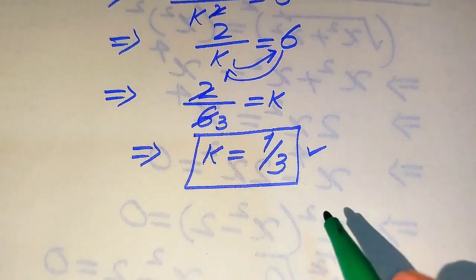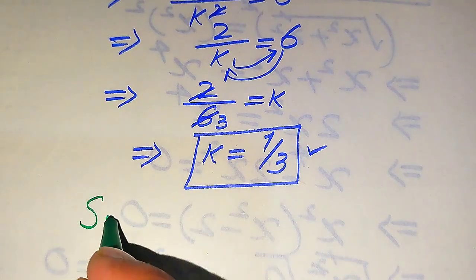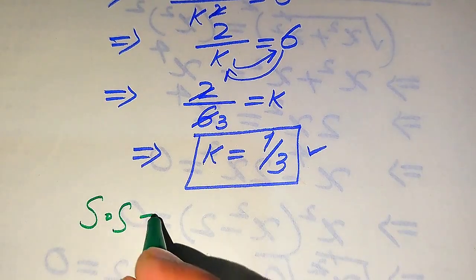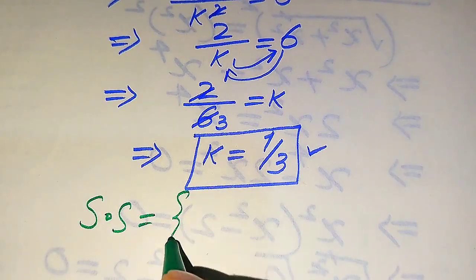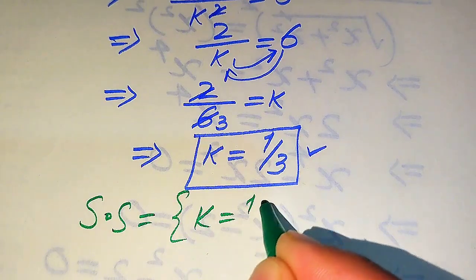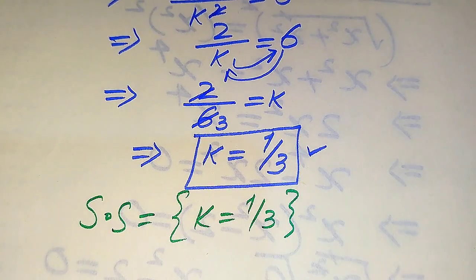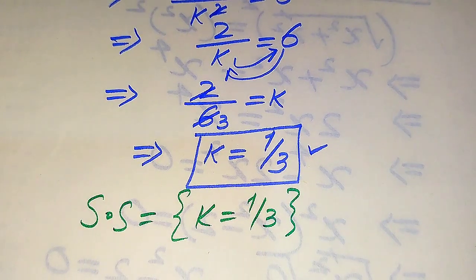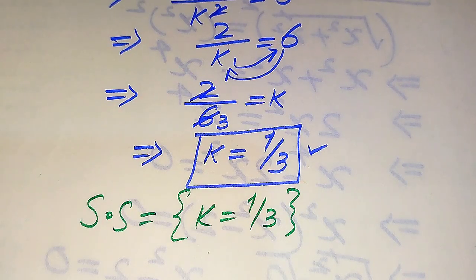The final conclusion is that k equals 1/3 is the solution set of the given equation, and this is our final answer. Thank you so much for watching this video. Please subscribe to my channel for more exciting videos.